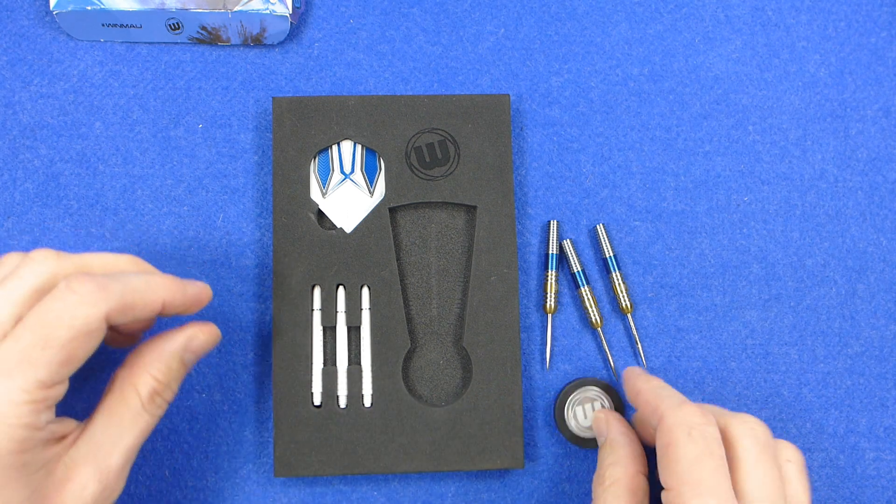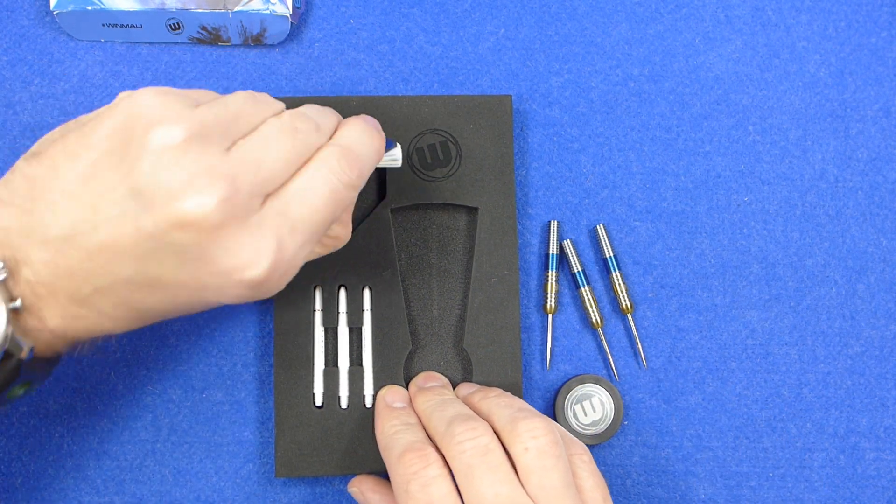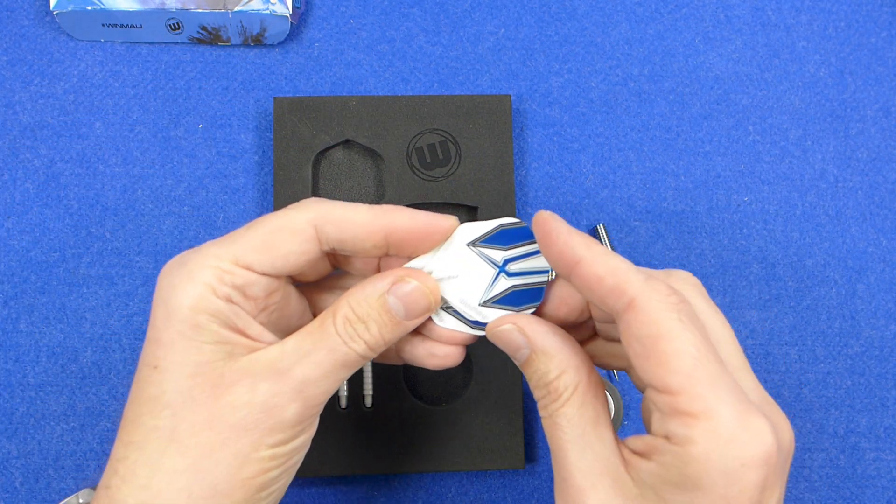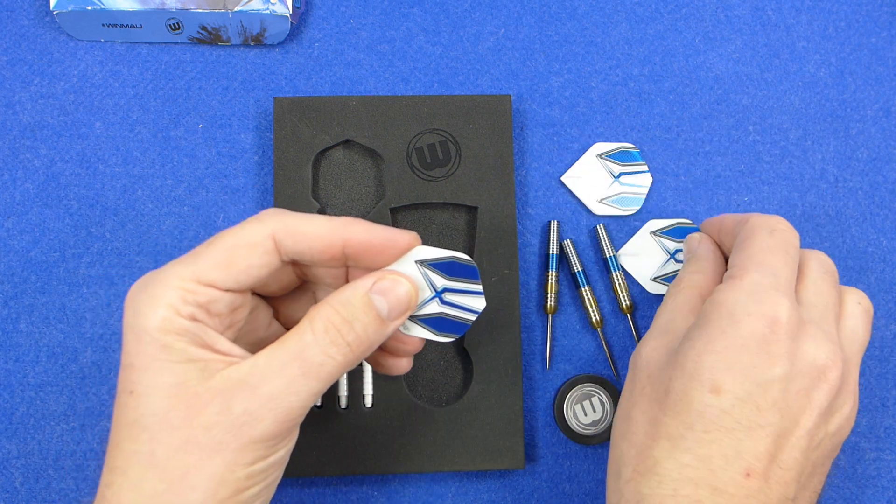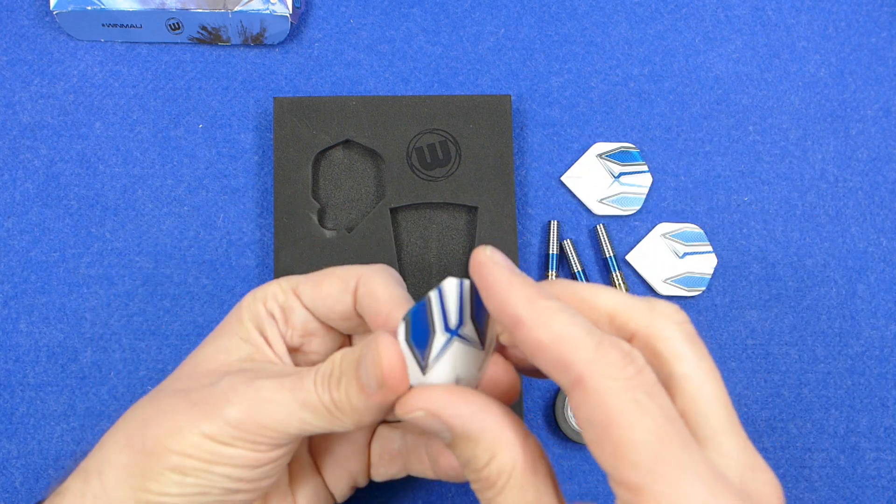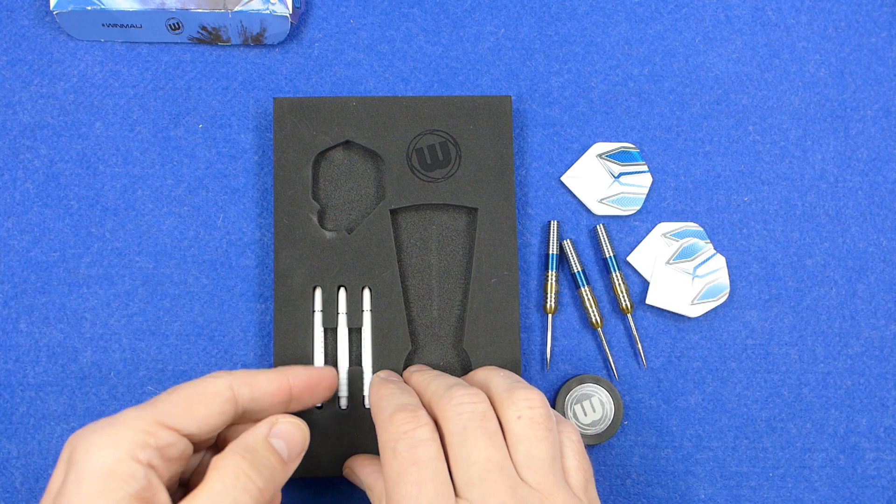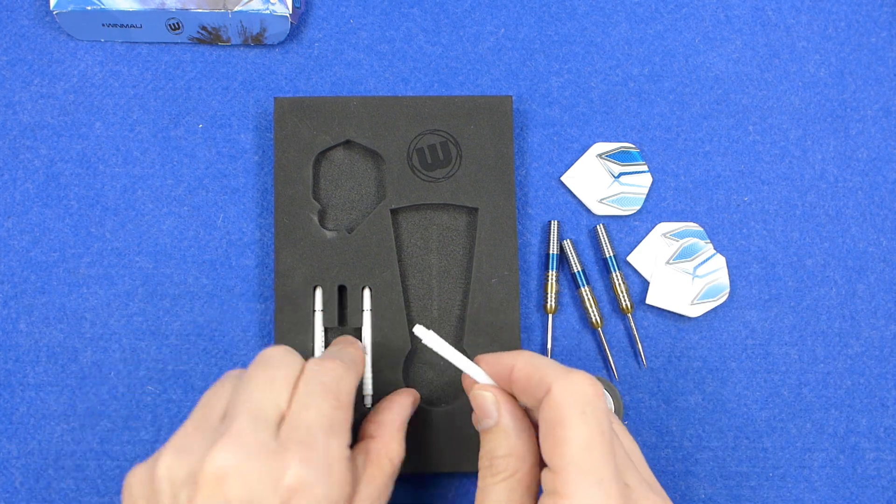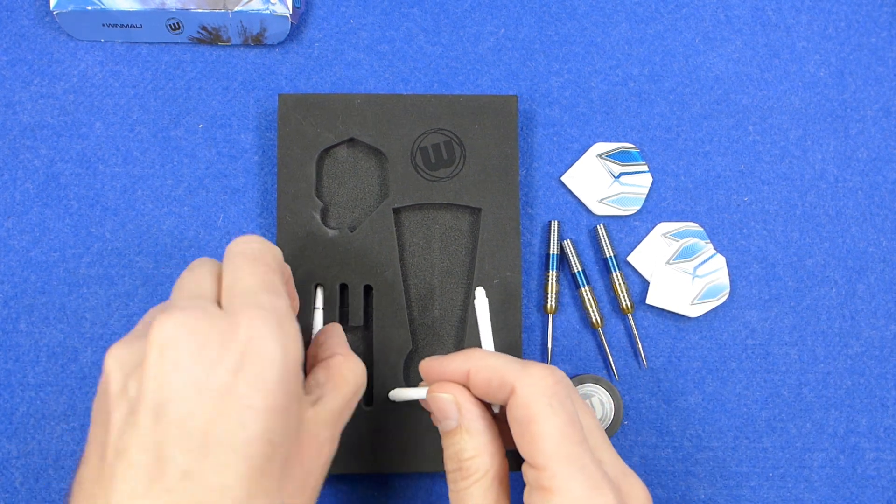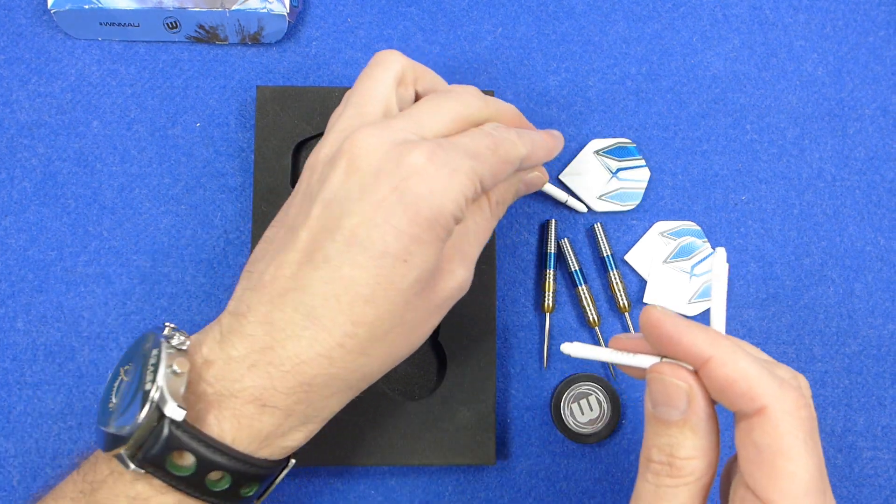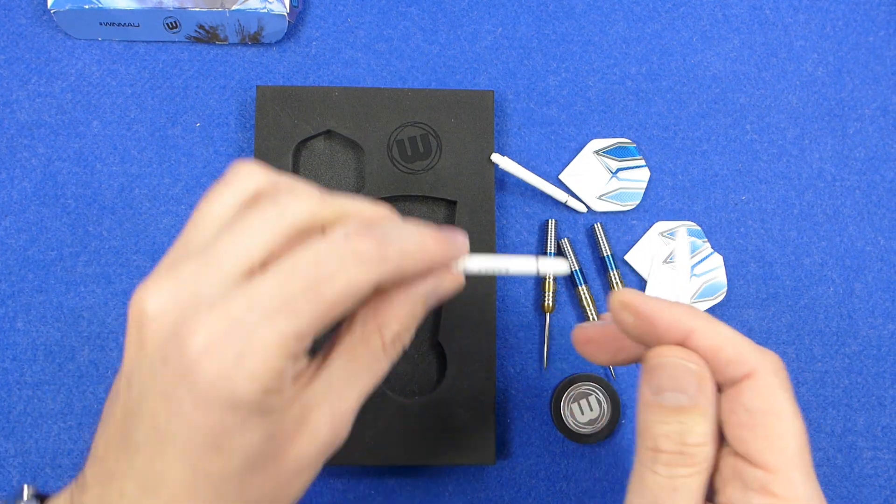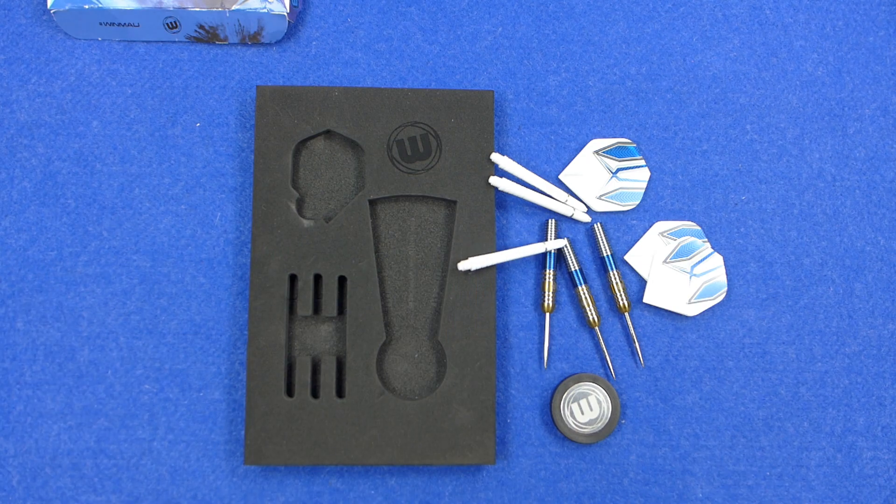Very striking looking dart. And you've got a set of the Prism Alpha standard shaped flights. Nice design on them. And you've also got a set of the new Prism Force stems. They look to be medium. So that's what you get in the pack.